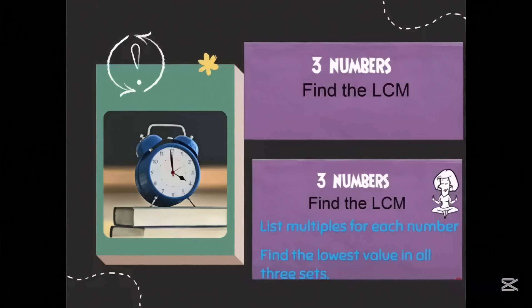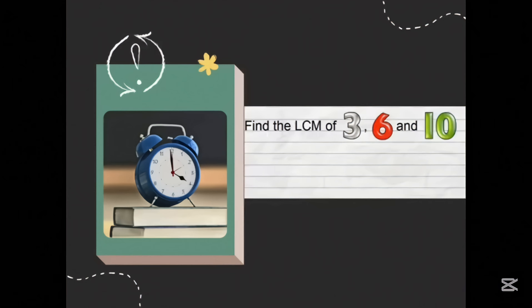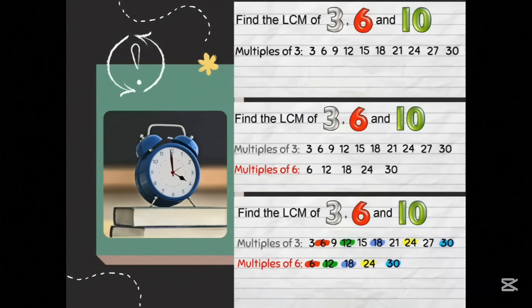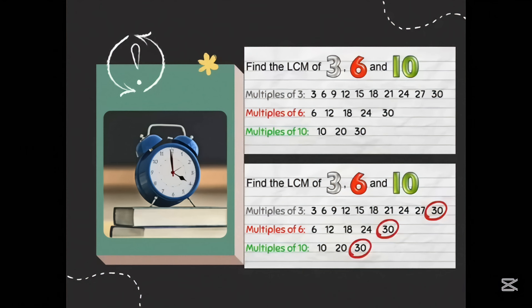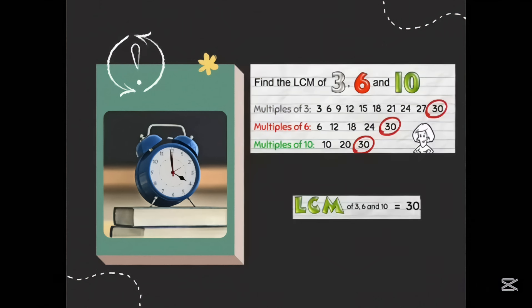Sometimes you are given a set of 3 numbers and told to find the LCM. In that case we list the multiples of each number and find the lowest value in all 3 sets. We will find the LCM of 3, 6, and 10. Multiples of 3: 3, 6, 9, 12, 15, 18, 21, 24, 27, 30. Multiples of 6: 6, 12, 18, 24, 30. Notice that every multiple of 6 is in the list of multiples of 3. But we cannot pick the LCM yet because we have to look at multiples of 10: 10, 20, 30. I can stop listing now because 30 is in all 3 sets of multiples. So 30 is the lowest multiple common to all — the LCM is 30.